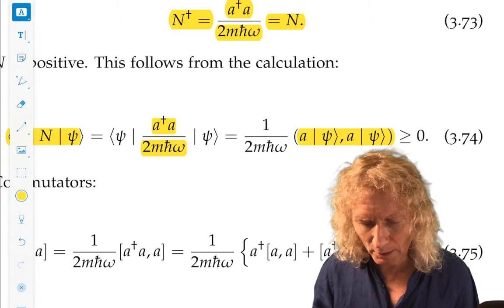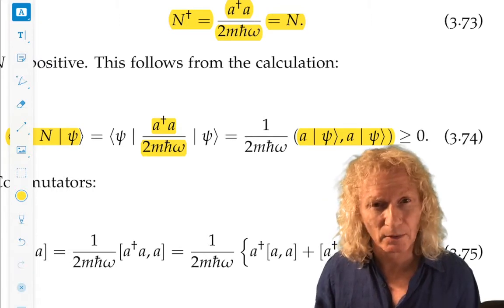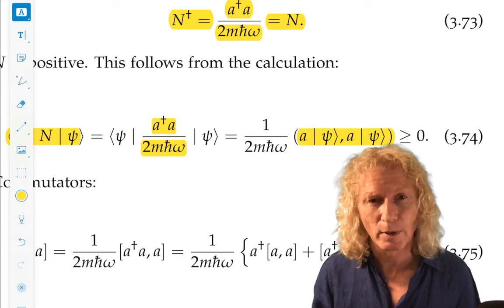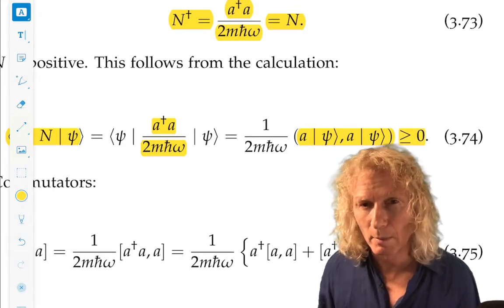And writing this in the old notation for inner product. You see, that's the inner product of A acting on ket psi with A acting on ket psi. Okay. Inner product of a vector with itself. That's greater than or equal to zero. And that's what I mean by positive.